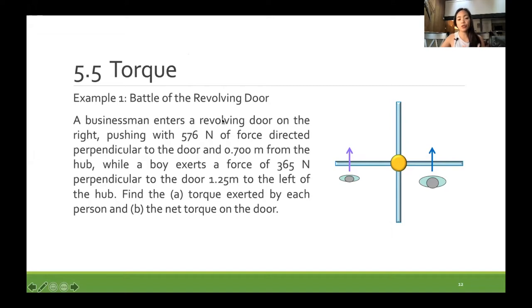While a boy exerts a force of 365 newtons perpendicular to the door 1.25 meters to the left of the hub. Find the torque exerted by each person and the net torque on the door.